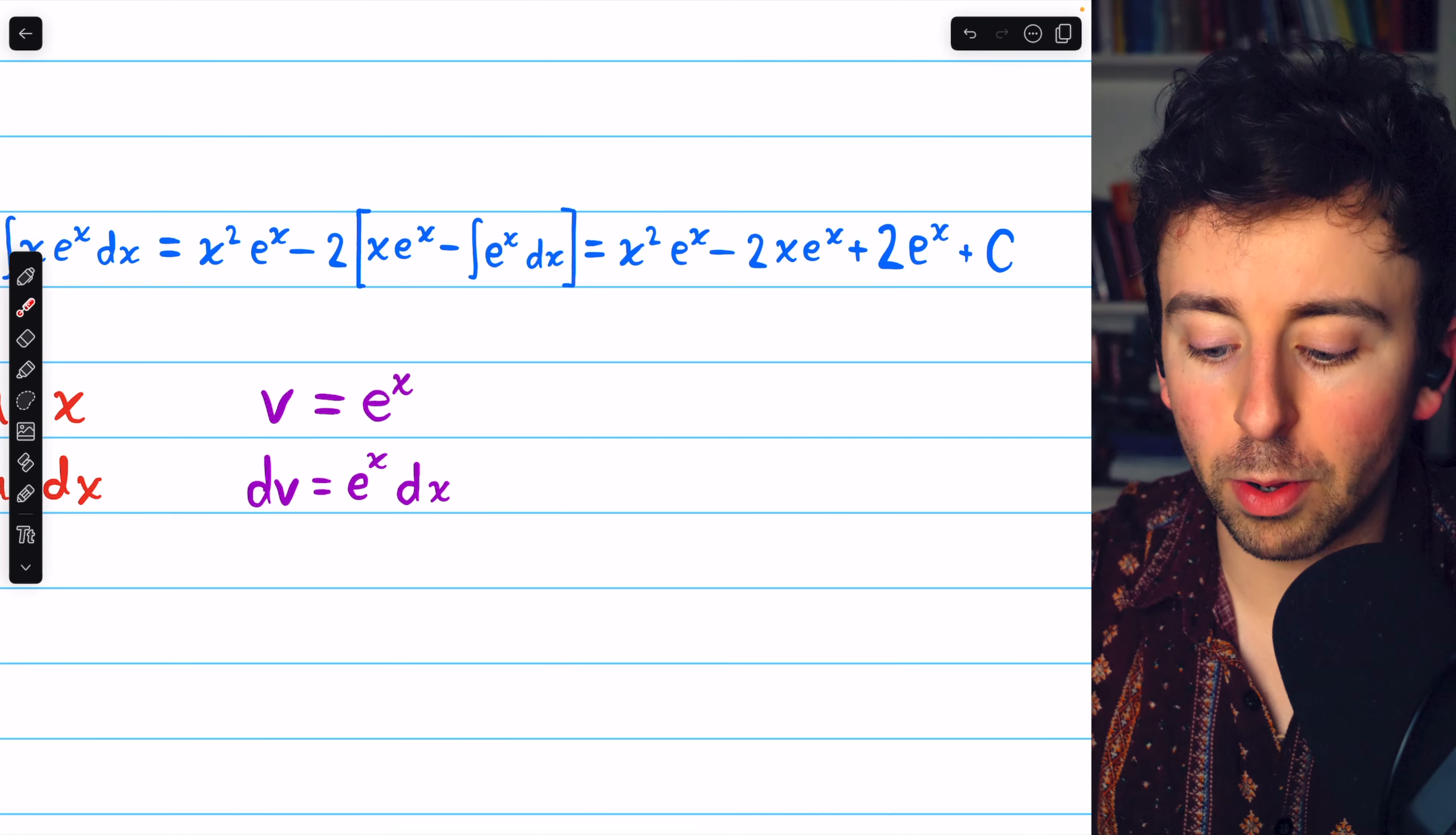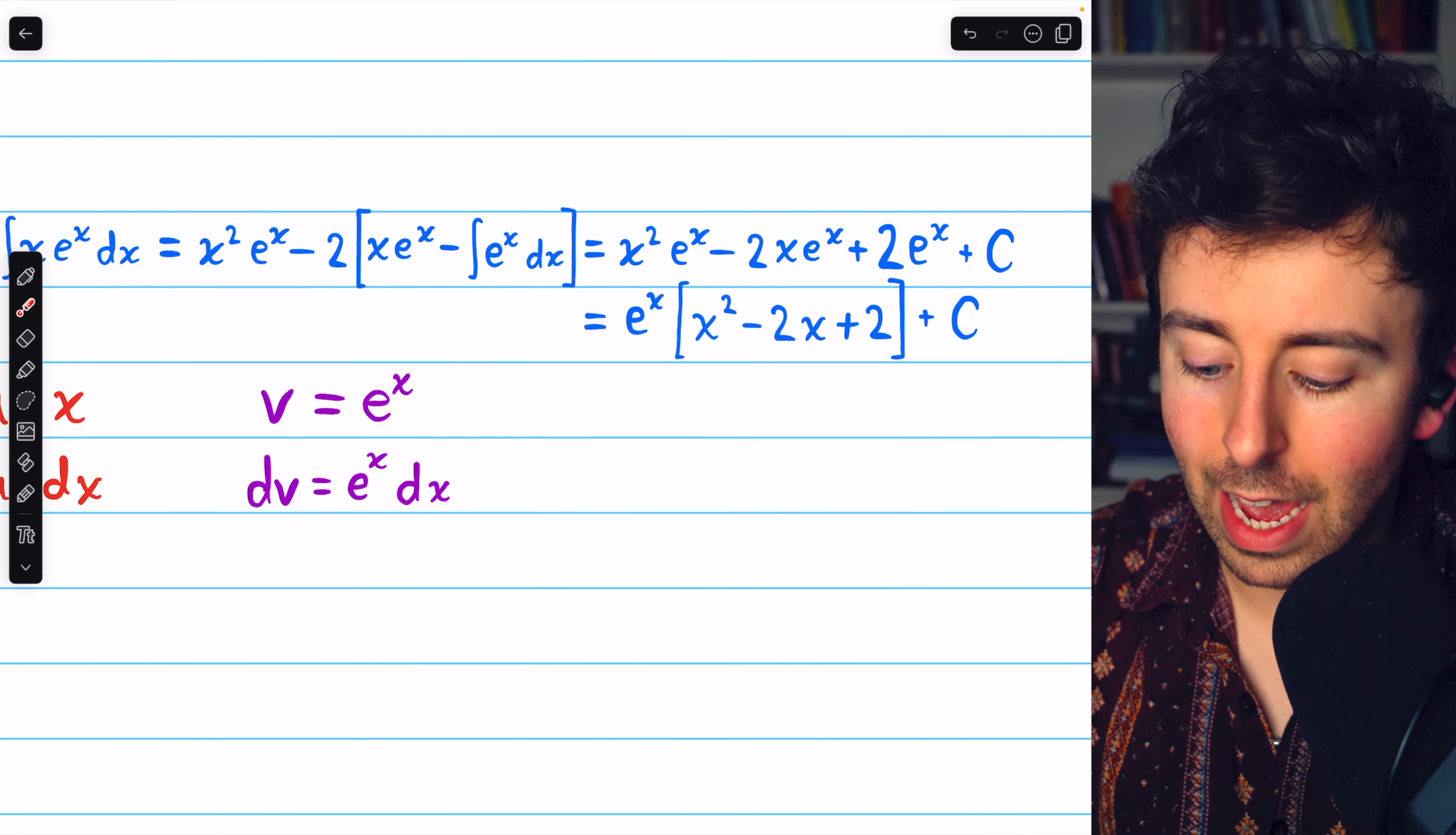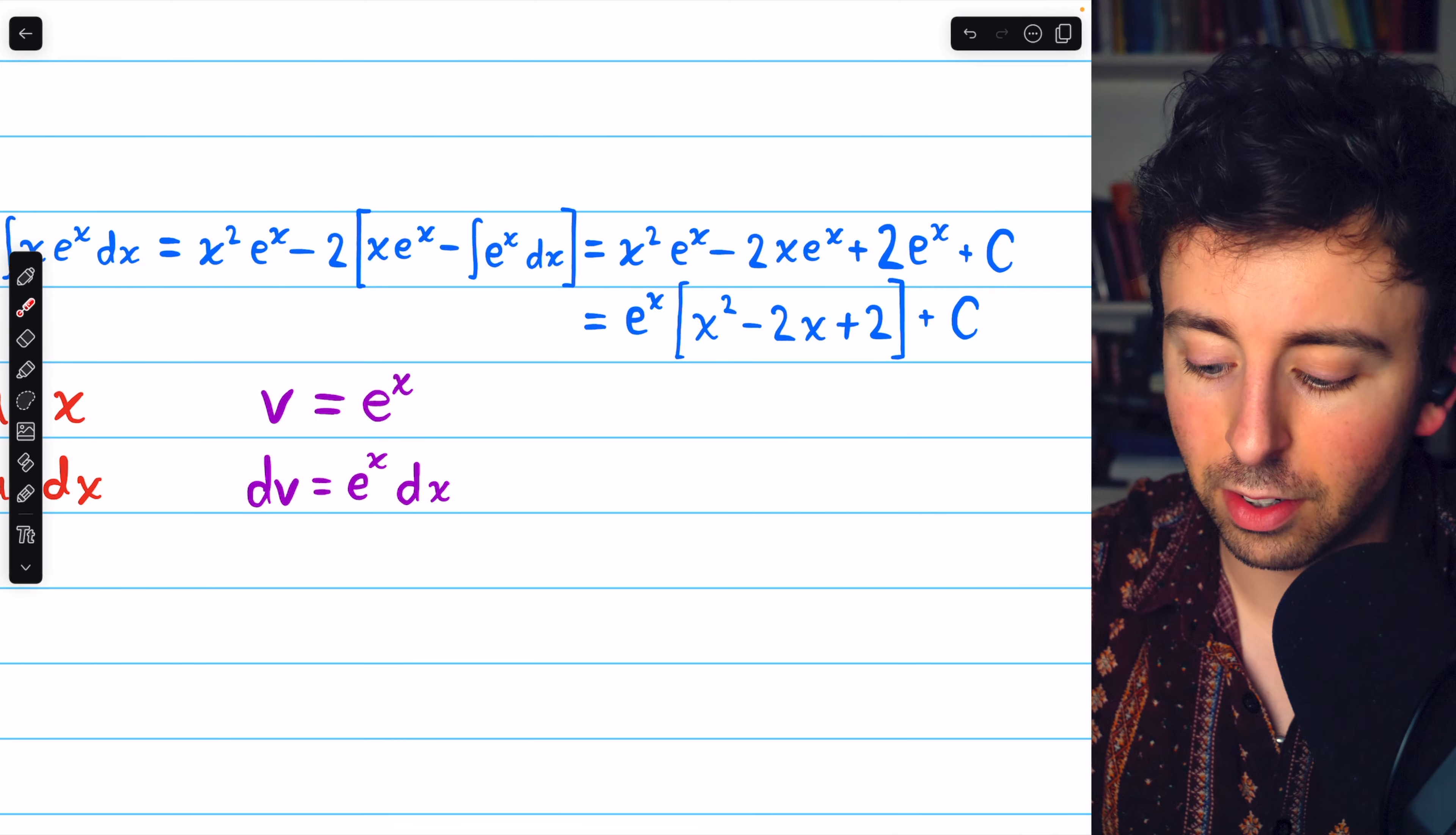We can go one step further. Let's factor an e to the x out of all this. Doing that, our final answer is e to the x times x squared minus 2x plus 2, plus the arbitrary constant.